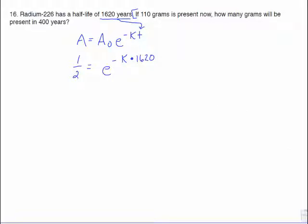To undo that, we need to do the opposite, which is to take the natural log of both sides. You do natural log of 1 half, you get negative 0.693 approximately. I would leave that whole number on your calculator screen. L and E cancels, and this gives us negative 1620 times k. So the E is gone.